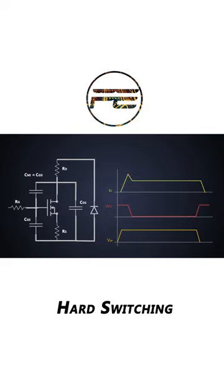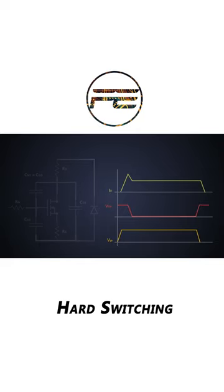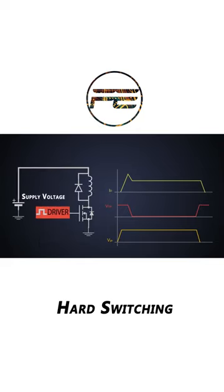This occurs during switching due to the parasitic elements such as parasitic capacitance at the gate, drain and source present inside the MOSFET. This type of switching is called hard switching.